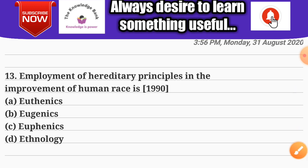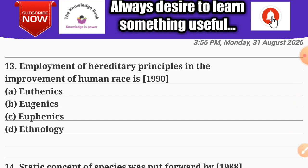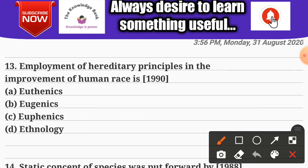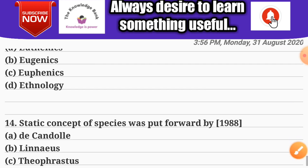Question number thirteen: improvement of hereditary principles in the human race is called — Options: A) euthenics; B) eugenics; C) euthenics; D) ethnology. The correct answer is B — eugenics.